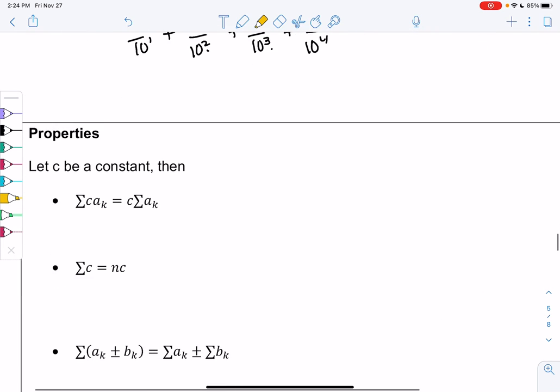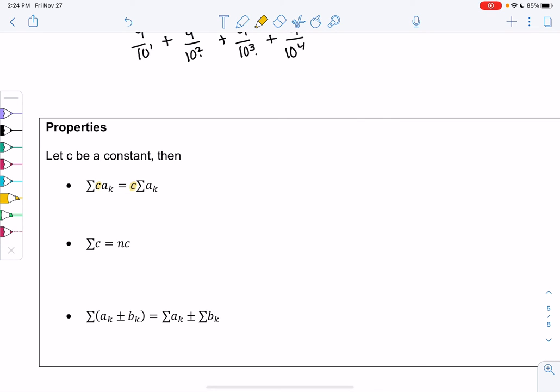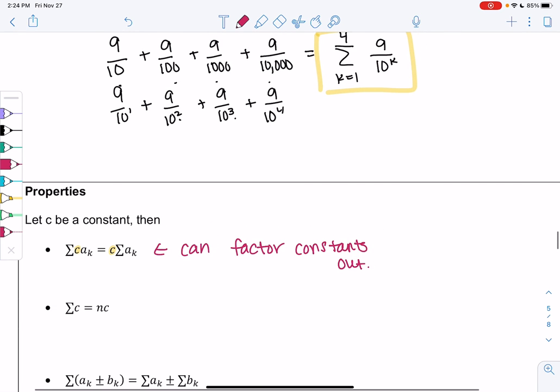So let's do some properties and we'll try some more examples. So some things we can do with series. If we have a constant, we can factor the constant out. So constant means it has nothing to do with k. So in this example above, 9 is a constant. And so I could have taken the 9 out. 10 is not a constant because it involves k. So that's what that rule is telling me. That would represent the same thing.